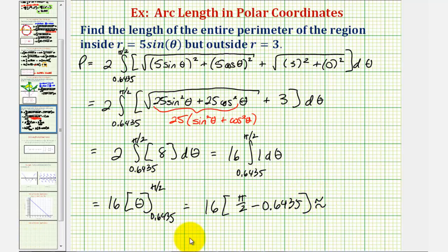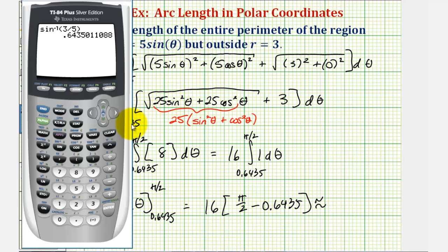And now we'll go to the calculator. 16 times pi divided by two minus 0.6435, which is approximately 14.8367, which would be the length of the entire perimeter of our region.